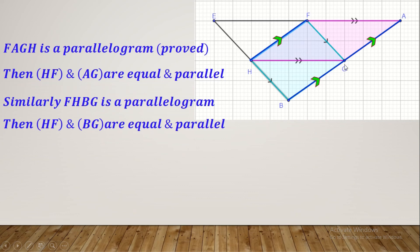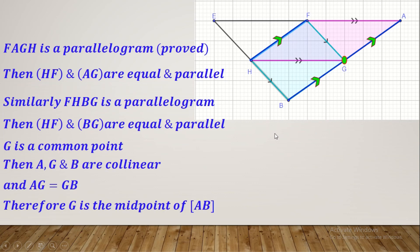We have proved that BG and GA are both equal and parallel to HF, and G is a common point. Therefore A, G, and B are collinear, and AG equals GB. Therefore G is the midpoint of segment AB. Thank you for watching. If you enjoyed this video, please like, share, and subscribe — with great appreciation for your support for the continuity of our channel.